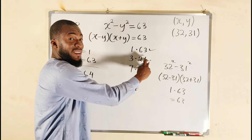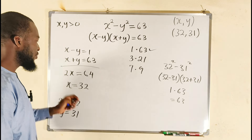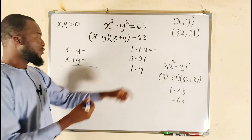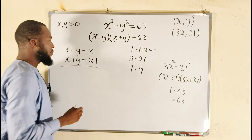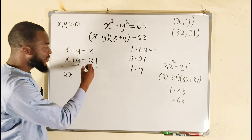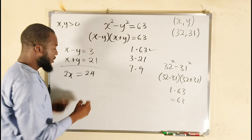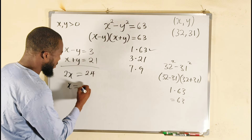Moving on to the next pair: we test 3 and 21. Replacing the previous factors, we now have x minus y equals 3 and x plus y equals 21. Adding these gives 2x equals 24; dividing both sides by 2, x equals 12.